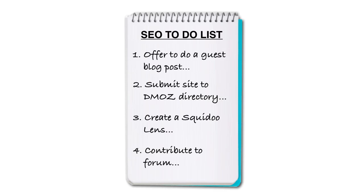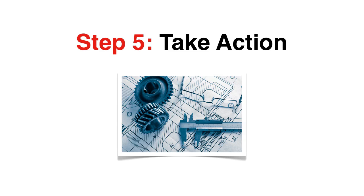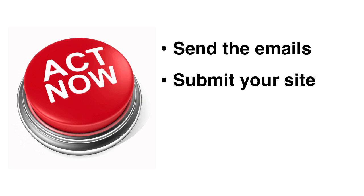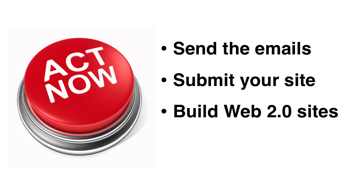Once you have your SEO to-do list, you'll be ready for the fifth step of the SEO blueprint, which is to take action. Step 5: Take action. Once you've reverse engineered your competitors' link networks and identified your own opportunities for link building, the most important thing you can do is to follow through and take action. Send those emails and offer to create good quality guest blog posts, submit your site to the appropriate directories, build your supporting web 2.0 properties, and get active in your marketplace by contributing to relevant blogs and forums. While it won't happen overnight, gradually you will obtain the backlinks you need to grow your link network, and as your link network gets stronger, your rankings in the search engines will improve.